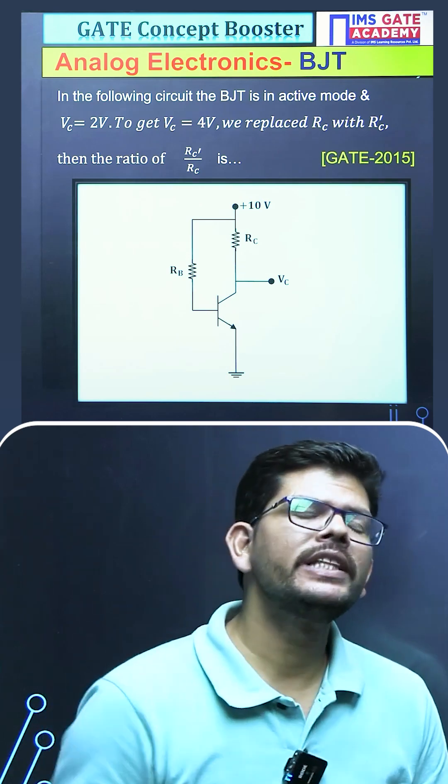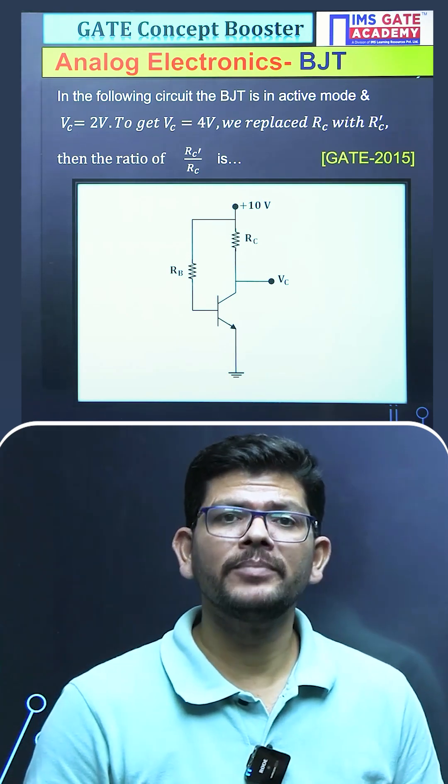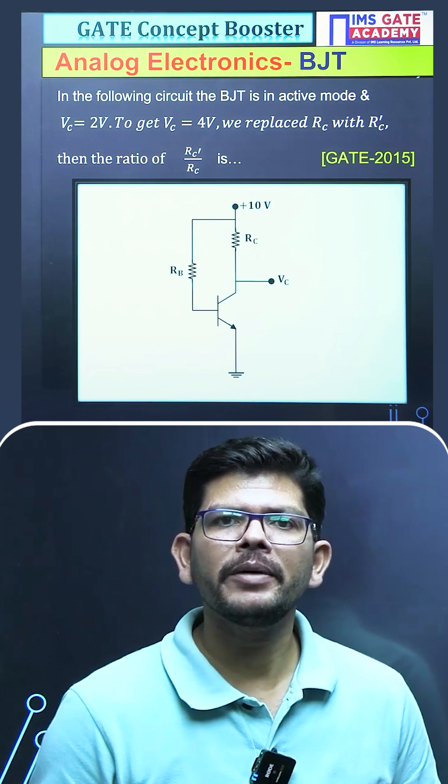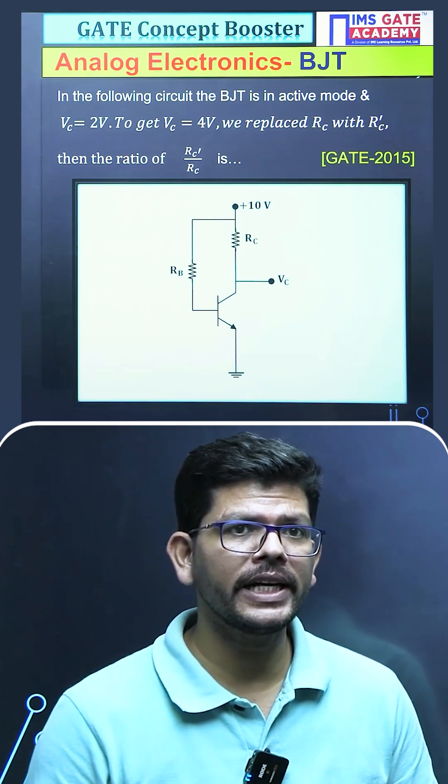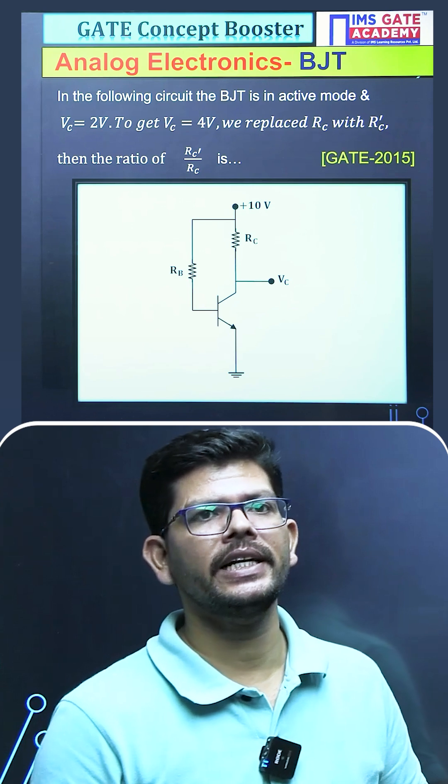Hello my dear students, let us solve this question which was asked from the subject analog electronics from the topic BJT in the year 2015. What we have to calculate here is that in this given circuit as they have